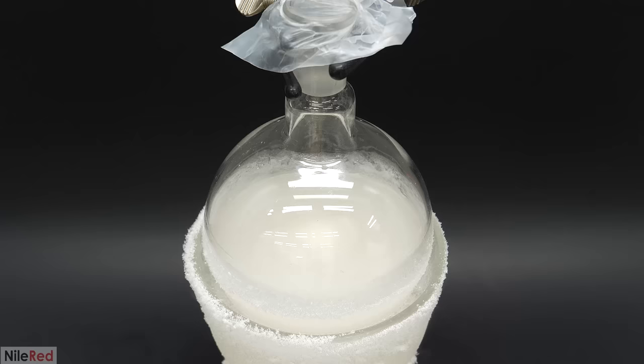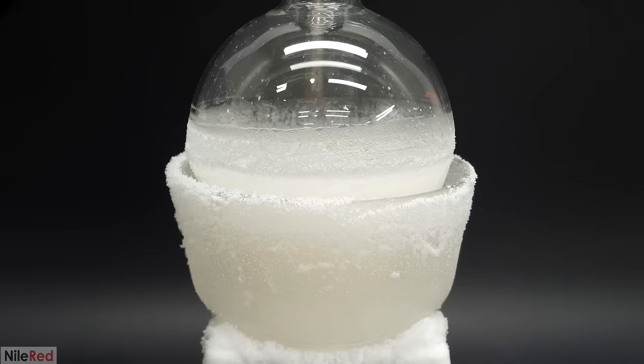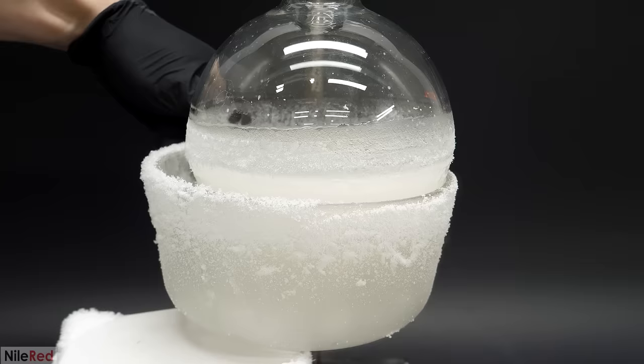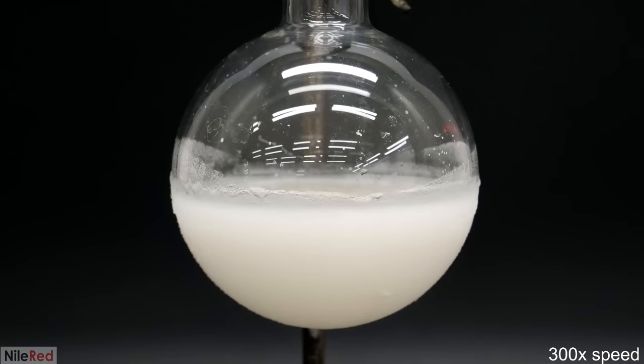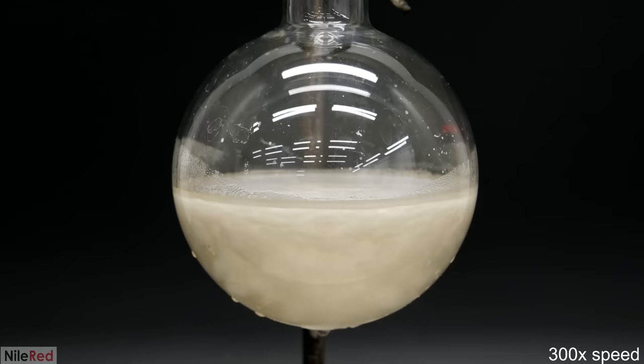However, it also made some side products like triphenylphosphine oxide and dimethyl sulfide that I needed to separate out. Before I could process any of it though, I had to let the reaction go to completion by just letting it warm up to room temperature. So I took away the dry ice bath and I let it sit there for about two hours. During this time, a bunch of white stuff settled out and I think this was mostly triphenylphosphine oxide and maybe a bit of triethylamine hydrochloride but I'm not 100% sure.